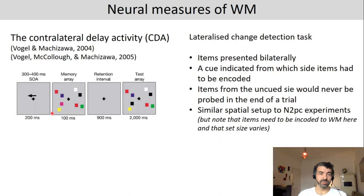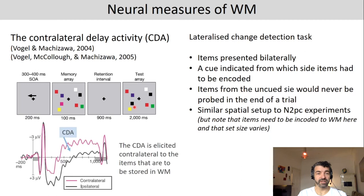In this lateralized version of the change detection task, participants attend only one hemifield indicated by an arrow. If the arrow points to the left, only items in the left hemifield need to be remembered — the other side will never be probed and can be ignored. There can be a change only in the attended hemifield. This allows us to look at the lateralized EEG signal, comparing electrodes contralateral to the memorized side with electrodes in the ipsilateral hemisphere.